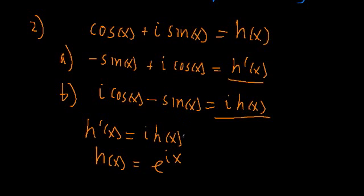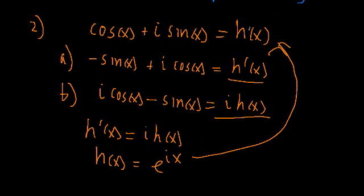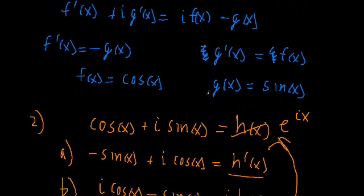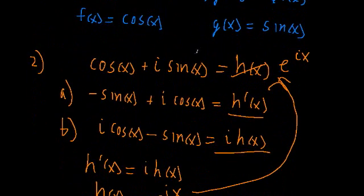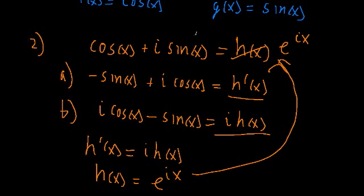Getting back to business, we found that H of X is equal to E to the I times X, so we can plug that back in and say that cosine of X plus I sine of X is equal to E to the I times X. So there we have it — we're once again able to prove Euler's formula, entirely with calculus and a little bit of differential equations, which we'll hopefully get to soon. In the next video, we're going to apply our Euler's formula and get back to working with complex numbers. See you in the next video.